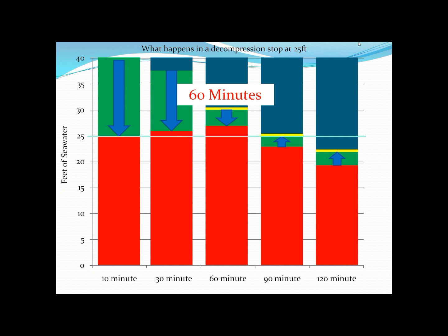What's actually happened is that the slow compartments during this decompression stop — the compartments with a half-time slower than 60 minutes — have actually now got very close to, or even reached, their M values. So we're in a situation where, as a result of doing a decompression stop, we have managed to get our very slow tissue compartments very close to, if not up to, their M values. Unlike the RDP, where slow tissue compartments very rarely get close to their M values unless you do an incredibly long, incredibly shallow dive, when you're deco diving it is actually more likely that you will get your slow tissues close to their M values.